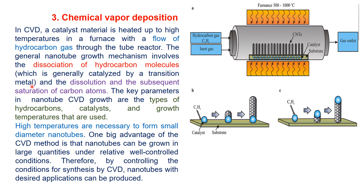The general nanotube growth mechanism involves the dissociation of hydrocarbon molecules, catalyzed by transition metals, followed by dissolution and subsequent saturation of carbon atoms to produce the carbon nanotube. The key parameters in CVD nanotube growth are the types of hydrocarbon, catalyst, and growth temperature used. High temperatures are necessary to form small diameter carbon nanotubes.